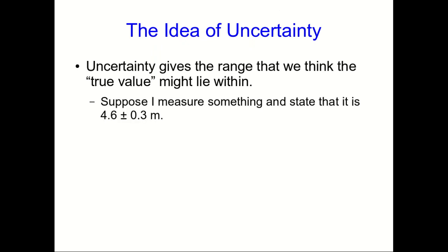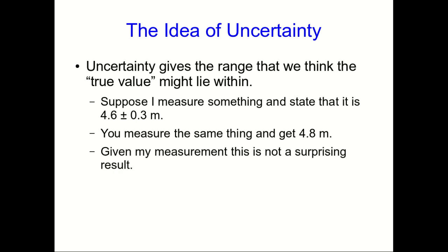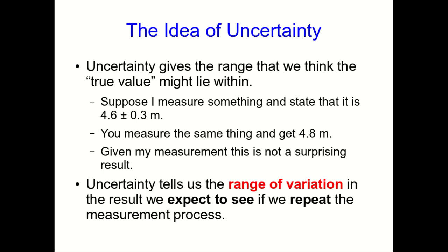If I measure something and state that it's 4.6 plus or minus 0.3 meters, and then you measure the same thing and you get 4.8 meters, is this surprising? No. Your measurement lies within the range that I stated the value should lie within. And so, your measurement is consistent with mine, and we shouldn't be surprised by it, even though it's different from what I stated as my measurement. An uncertainty tells us a range of variation, so that if we repeat the measurement, we expect to see values lying within that range.